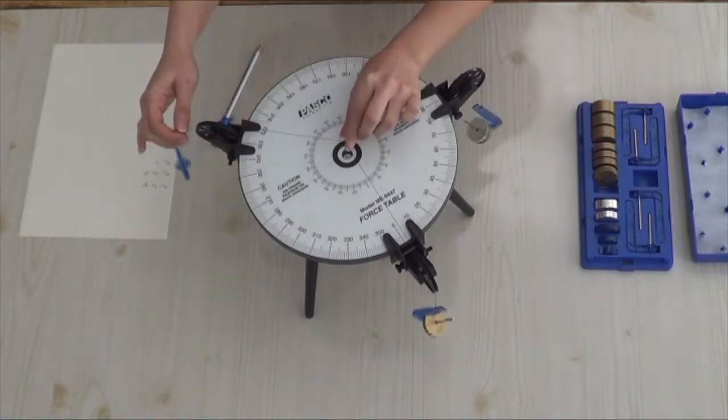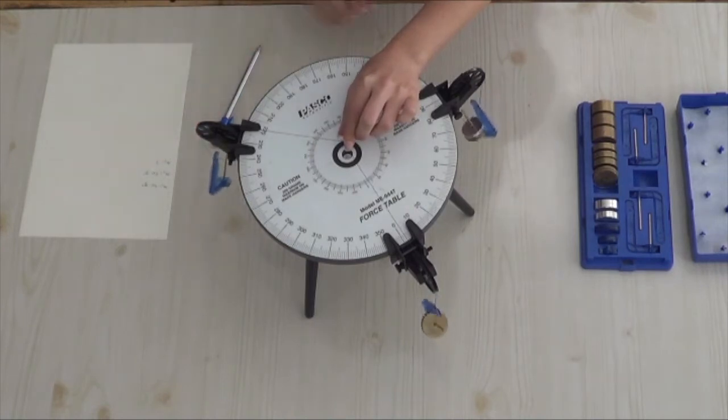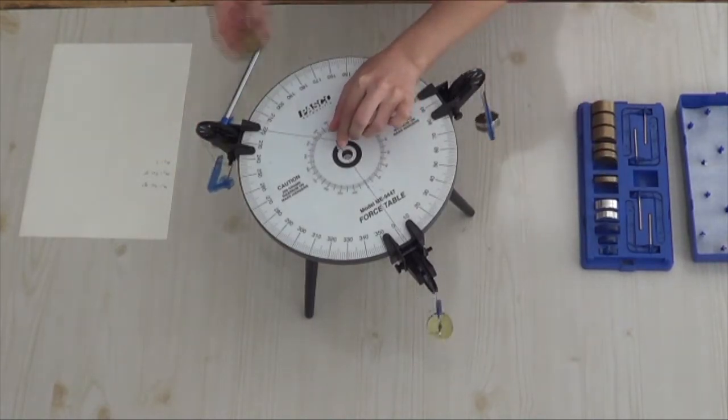However, before doing that, add some masses to the third hanger till the knot is situated at the center of the force table.